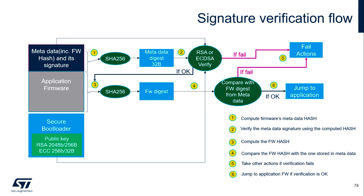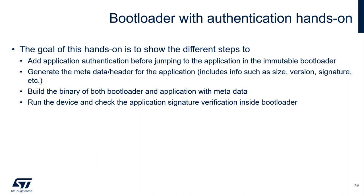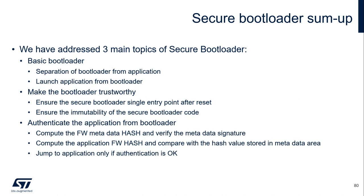Now let's have a hands-on of the bootloader with authentication. The goal of this hands-on is to show the different steps to add application authentication before jumping to the target application in the immutable bootloader: generate the metadata header for the application including information such as size, version, and signature; build a binary of both bootloader and application with metadata; then run the device and check the application signature verification procedure.